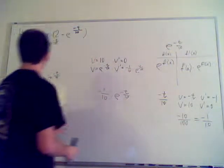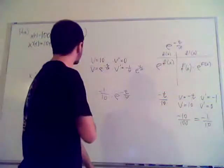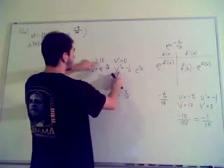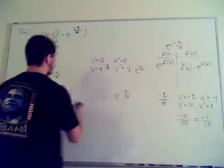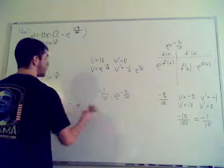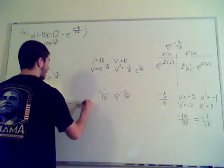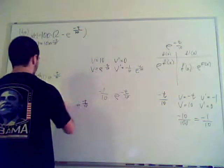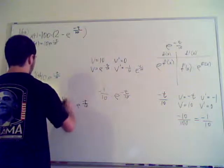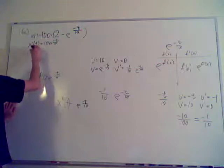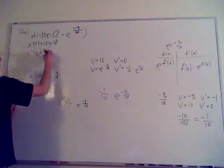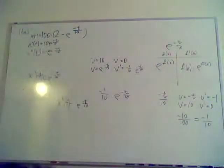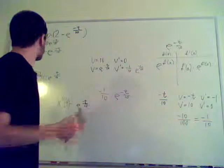Alright, now again product rule. So u times v prime cancels out 10 and 1 over 10, so you get negative 1 e, so it's negative e to the negative t over 10 plus 0. So therefore this is your answer, or not f, x double prime of t. So now I'll fill up here: x double prime of t equals negative e to the negative t over 10. And that is right, hallelujah. I thought I messed up.